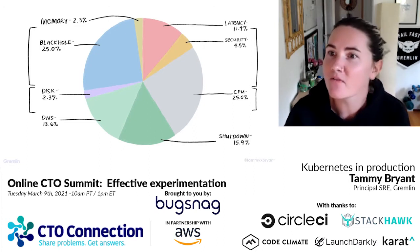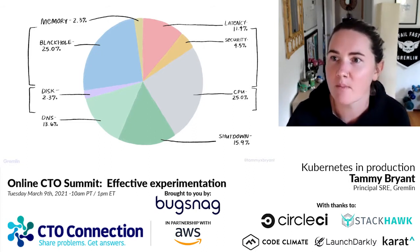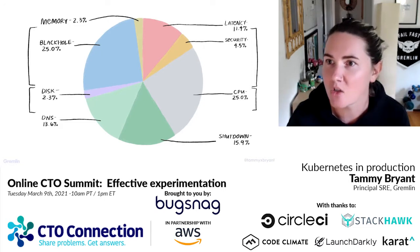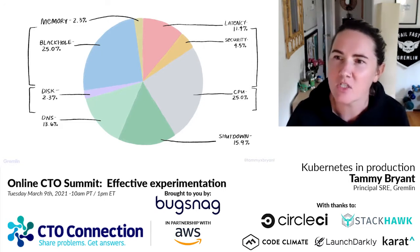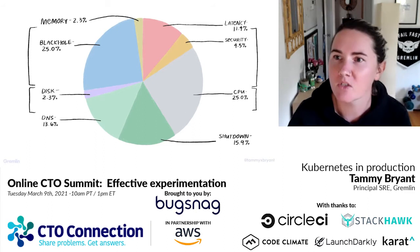Often this is different from what you'd expect. I didn't expect to see black hole and CPU as the top issues related to Kubernetes — I thought shutdown would actually be one of the top issues.